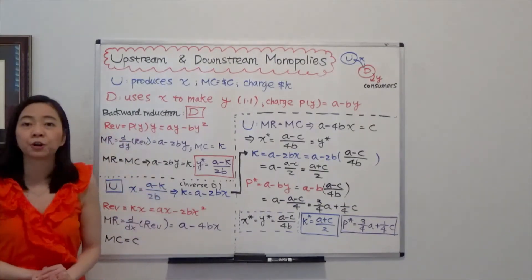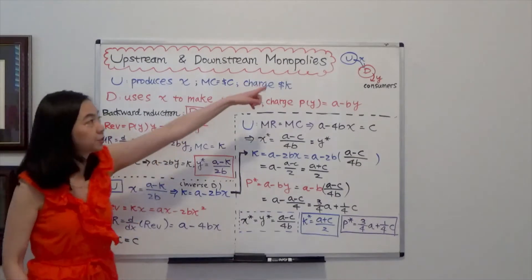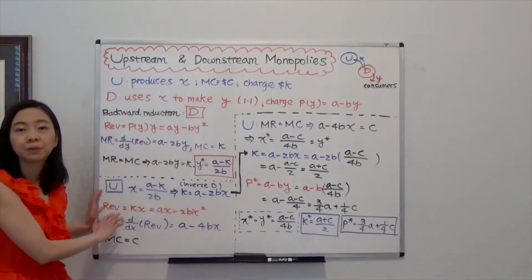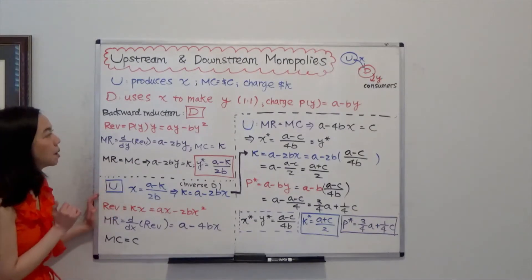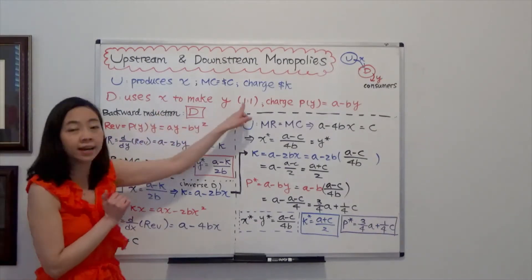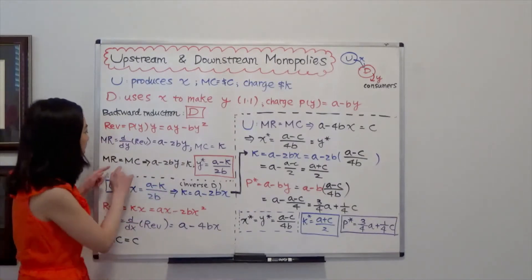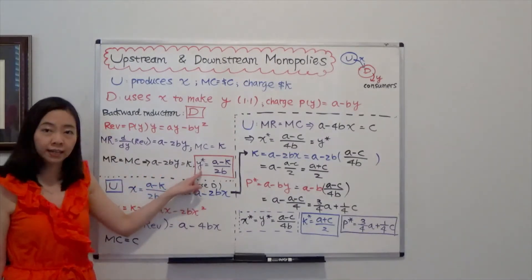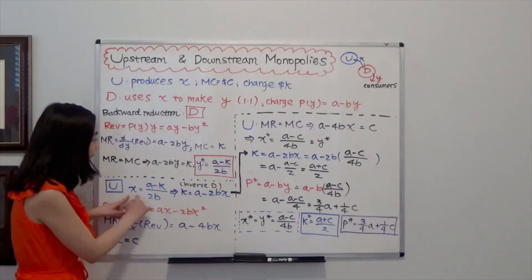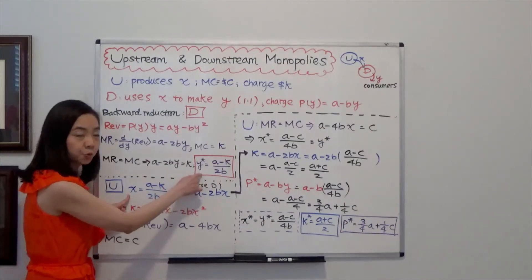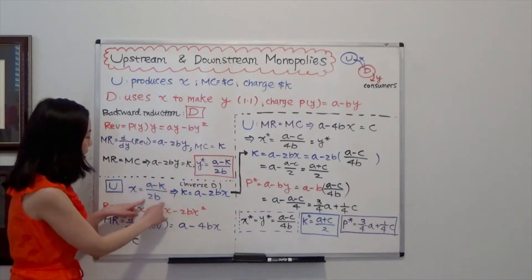Now we have solved the problem for Company D. We're going to go back to solve for the upstream monopoly's problem, Company U. So Company U says: because the ratio of X to Y is 1 to 1, I see that Company D is going to produce Y star. So I am going to produce that quantity too. So my X is exactly equal to Y, which is equal to (A minus K) over 2B.